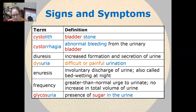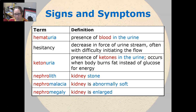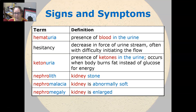Glycosuria is a presence of glucose or sugar in the urine. Hematuria is a presence of blood in the urine. Hesitancy is a decreased force in the urine stream and is often with difficulty in initiating the flow.